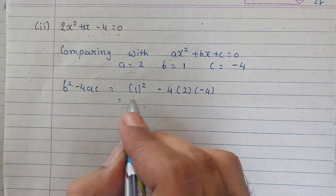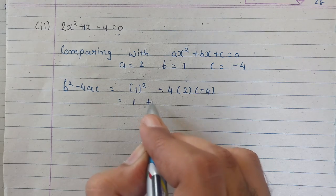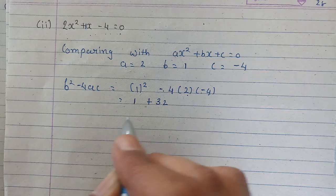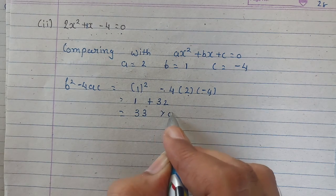On further solving it, square of 1 will be 1, minus and minus becomes plus, 4 times 4 is 16, times 2 is 32. Now 1 plus 32 is equal to 33, which is greater than 0.